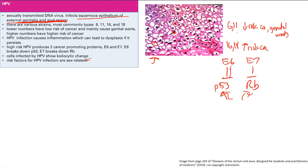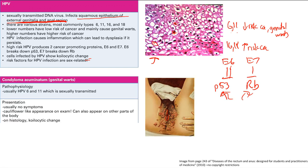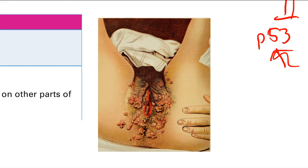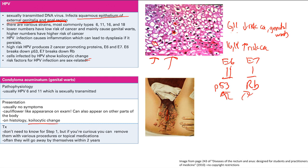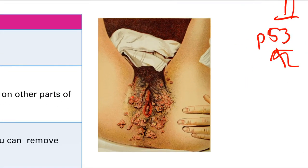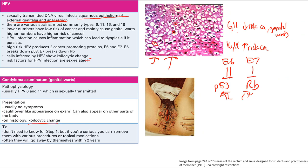HPV can cause condyloma acuminatum — genital warts — caused by low-risk types 6 and 11. Usually asymptomatic, they appear as cauliflower-like growths on the vulva or other areas. Histology shows koilocytic change. Treatment options include topical medications to destroy the wart cells, cryotherapy, surgical removal, or watchful waiting, as they can resolve spontaneously within two years.